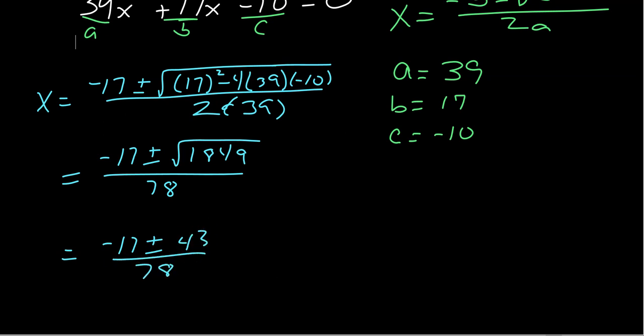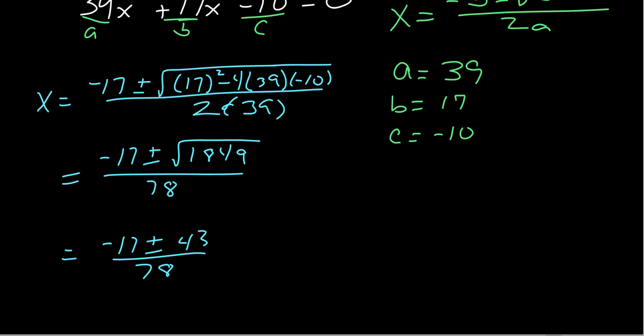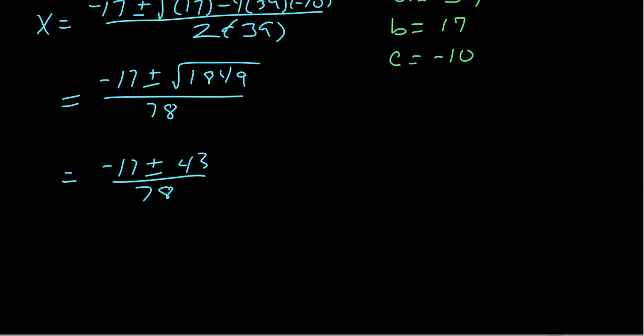Now the plus and minus sign means I have to actually do this twice. One time I need to simplify this using a plus, the other time with a negative. So we get negative 17 plus 43 over 78, and then the other answer would be negative 17 minus 43 over 78.